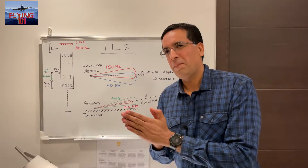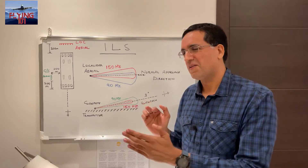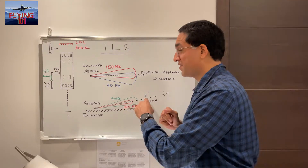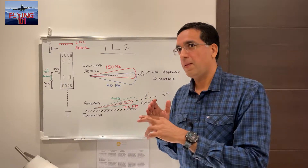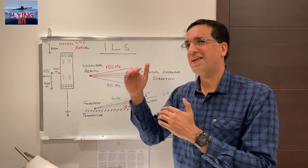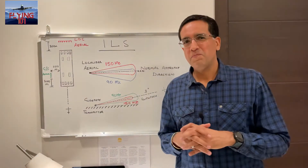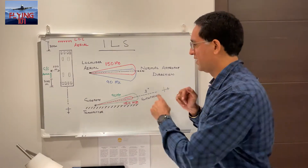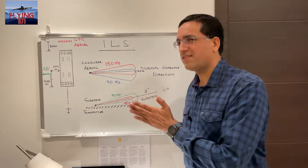The glide slope aerial has a similar radiation pattern: two lobes modulated at 90 Hz and 150 Hz, shown as green and red. There is an intersection point of both lobes represented by a black dotted line — this is the glide path the aircraft needs to fly to be correctly positioned vertically for landing at the touchdown point. Glide paths typically tend to be around three degrees.